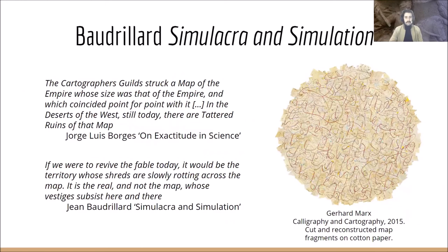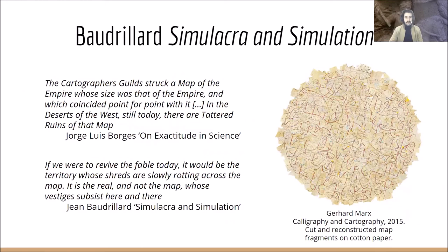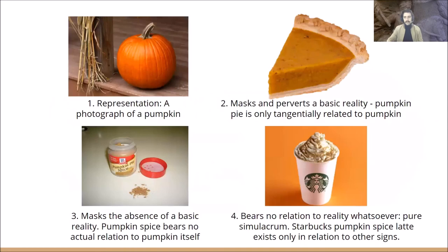In Simulacra and Simulation, Baudrillard used the vignette of the Cartographers Guild to illustrate that the representation of reality had come to be perceived as more significant than reality itself. In Baudrillard, the guild produces a map so perfectly and intricately representative of the territory it charts that it mimics the dimensions perfectly and covers completely the landscape. Baudrillard contended that in the postmodern condition of hyperreality, the map would be valued and preserved, but the territory would be left to disintegrate. To illustrate the stages of representation, I like to use the example of the pumpkin spice latte from Starbucks — Baudrillard in effect argues that we have forgotten the pumpkin along the process, and we live today in the age of this latte, the hyperreal representation of the pumpkin, better than the original but bearing no intrinsic relationship to it.